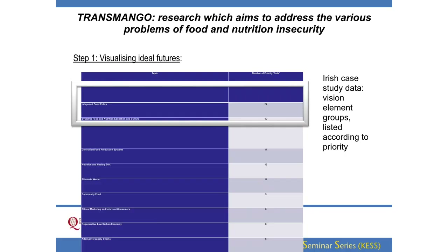The result was about ten different topics, and we wanted to isolate the top three — the ones these stakeholders said were most important. The top one, by quite a distance, was integrated food policy. The second was systemic food and nutrition education and culture. The third was diversified food production systems.